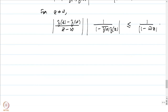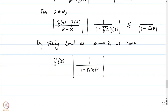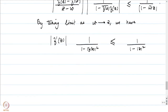Taking the limit as w → z (since f is holomorphic), the left side becomes |f'(z)| · 1/(1 − |f(z)|²), where the absolute value can be removed because f maps D to D so 1 − |f(z)|² > 0. The right side becomes 1/(1 − |z|²), which is also positive. This gives |f'(z)| / (1 − |f(z)|²) ≤ 1/(1 − |z|²), completing the proof of the Schwarz-Pick theorem.